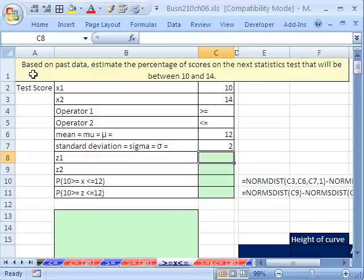Here's our situation based on past data. Estimate the percentage of scores on the next stat test that will be between 10 and 14, given a mu of 12 and a standard deviation of 2. We'll calculate our individual probabilities.